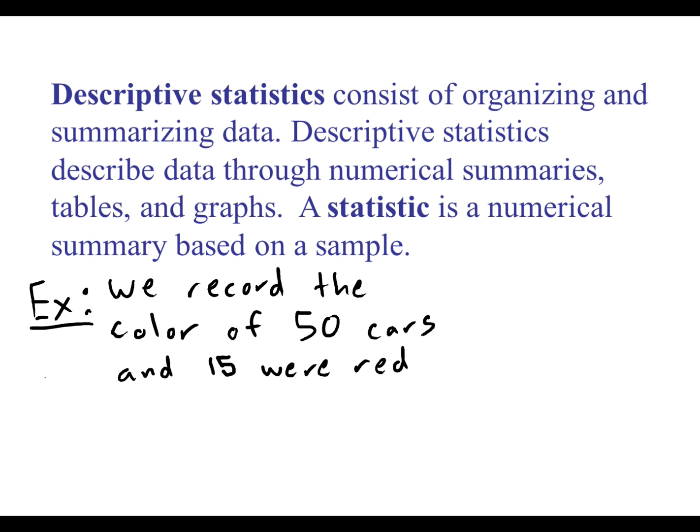So descriptive statistics are just describing what is going on with the sample that we took. Sticking with the car example, suppose that we were able to collect information on the color of 50 cars. And suppose 15 of those cars happen to be red. Well this collection of 50 cars is our sample itself. It's the individuals that we gathered data on. And this 15 right here is a number that describes that sample.